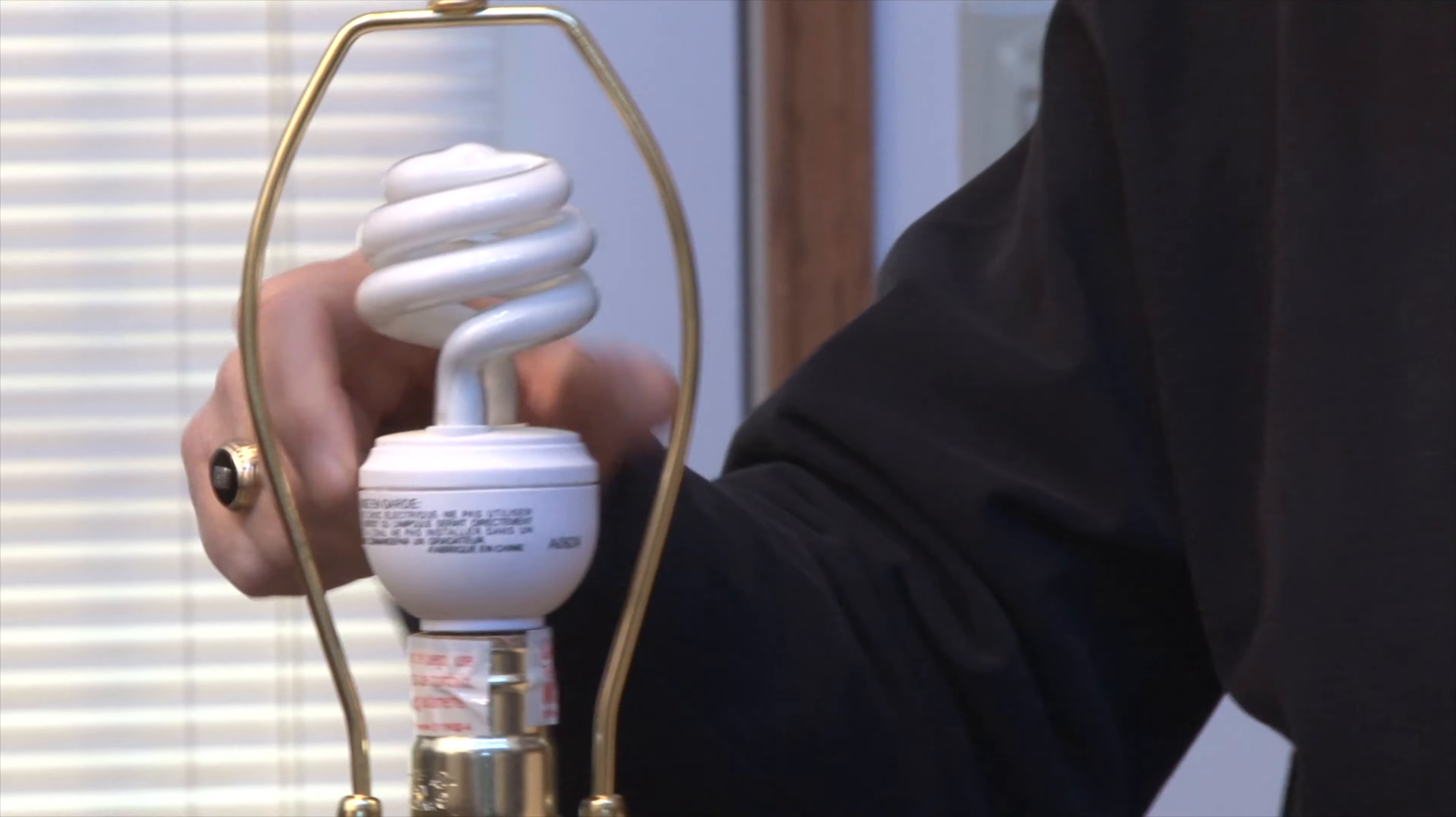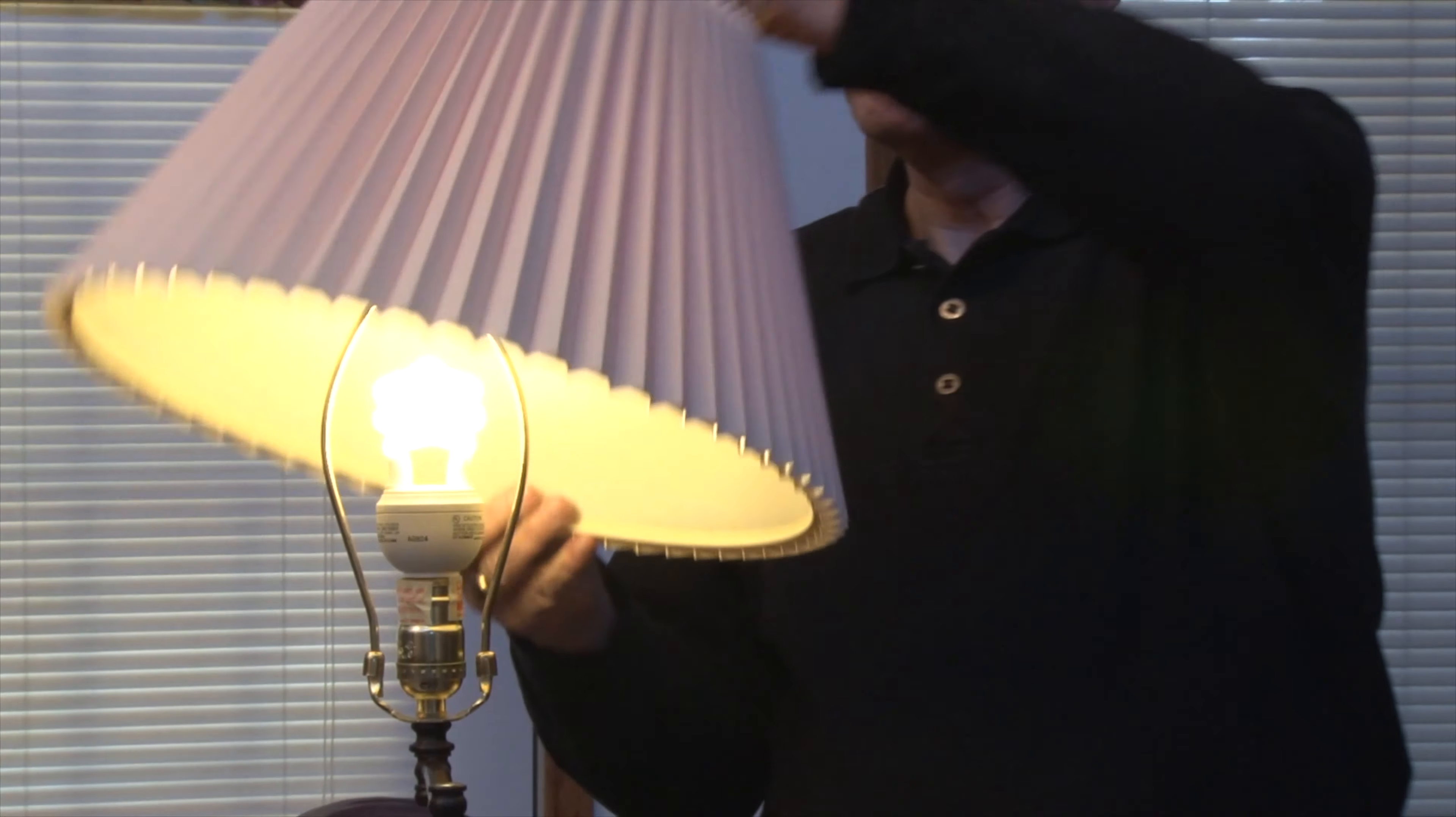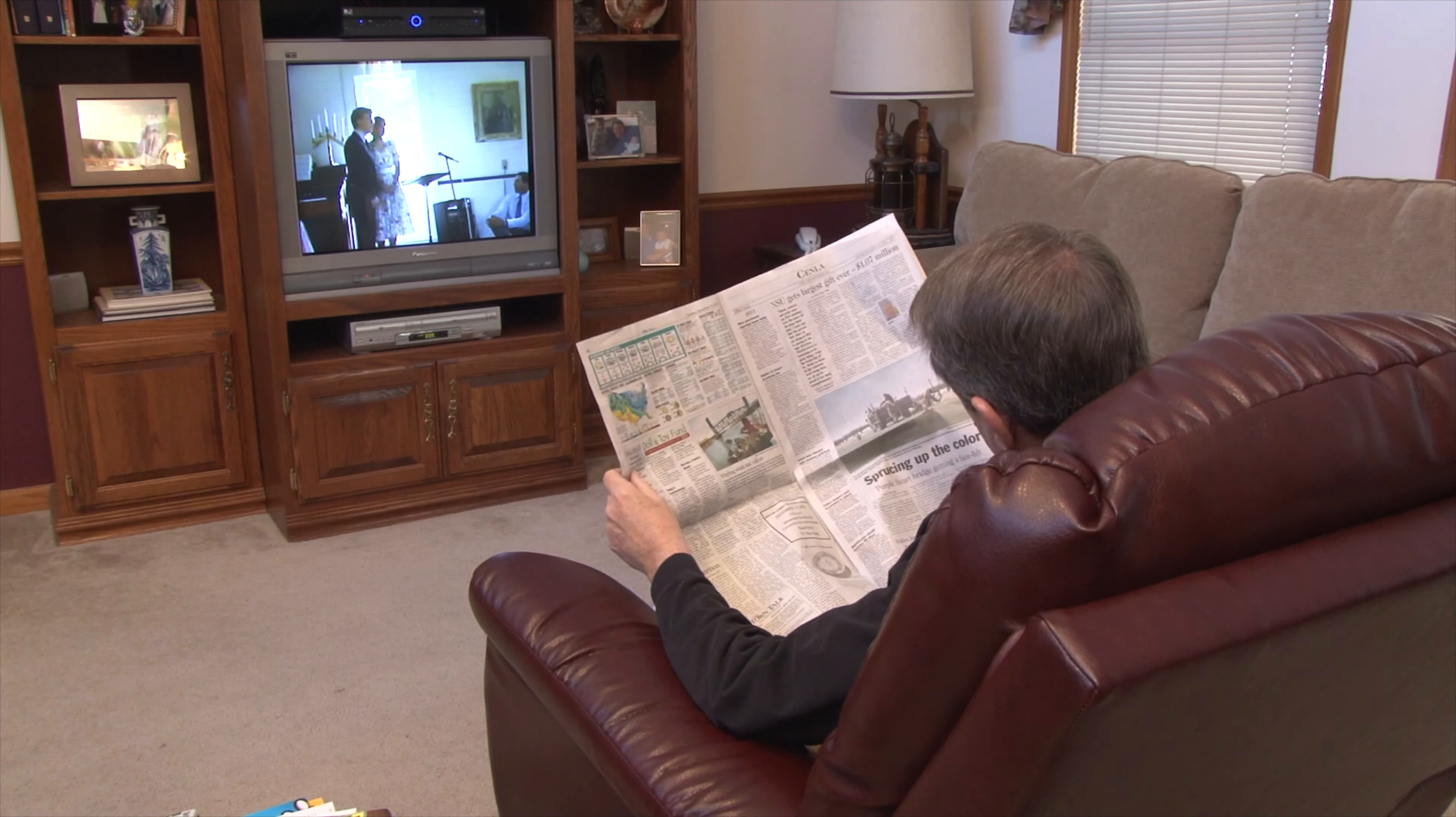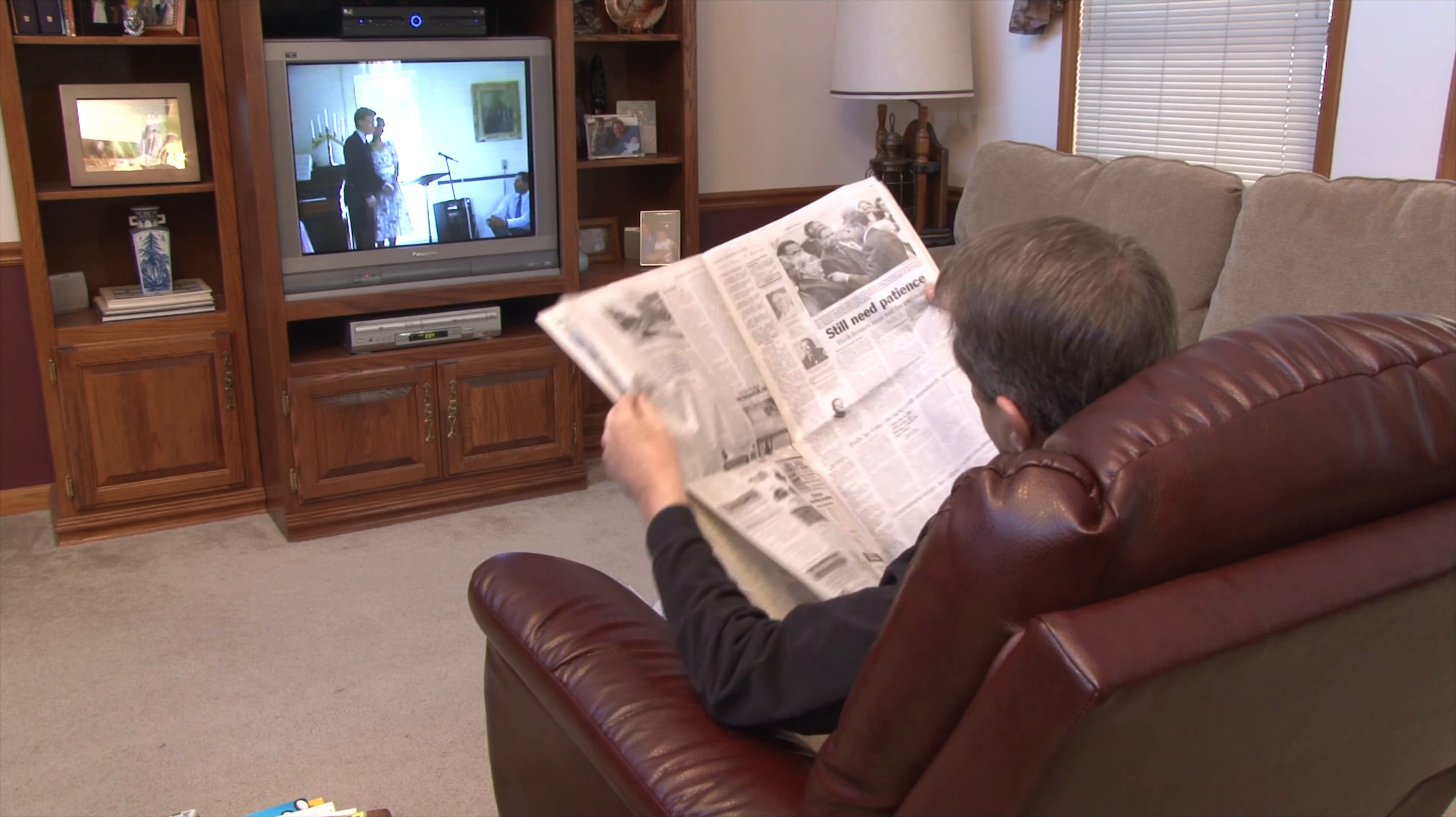120-240 volts is a secondary distribution voltage that provides a customer with two voltage options: 120 volts, which is typically used to power electric lights and small appliances such as television sets, microwaves,